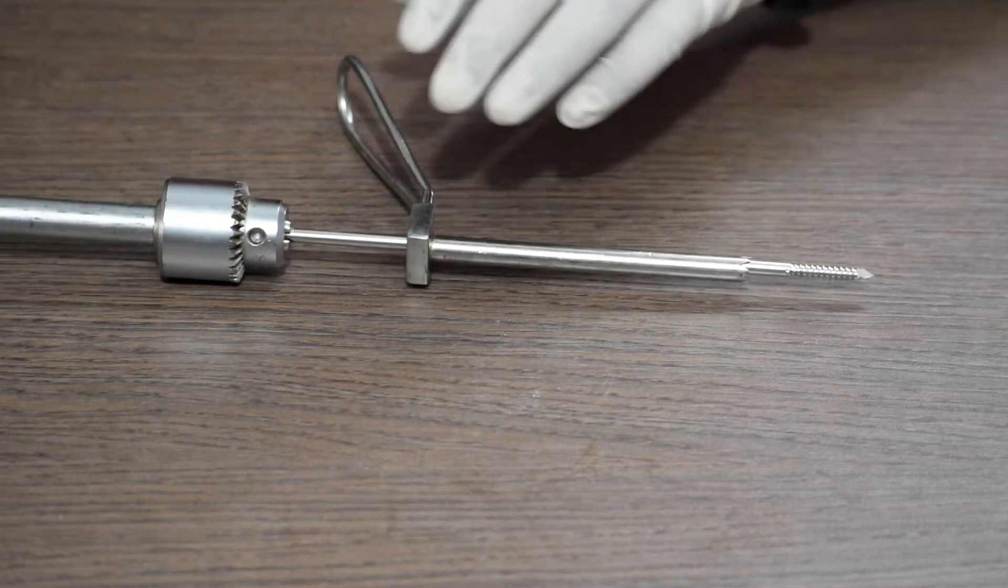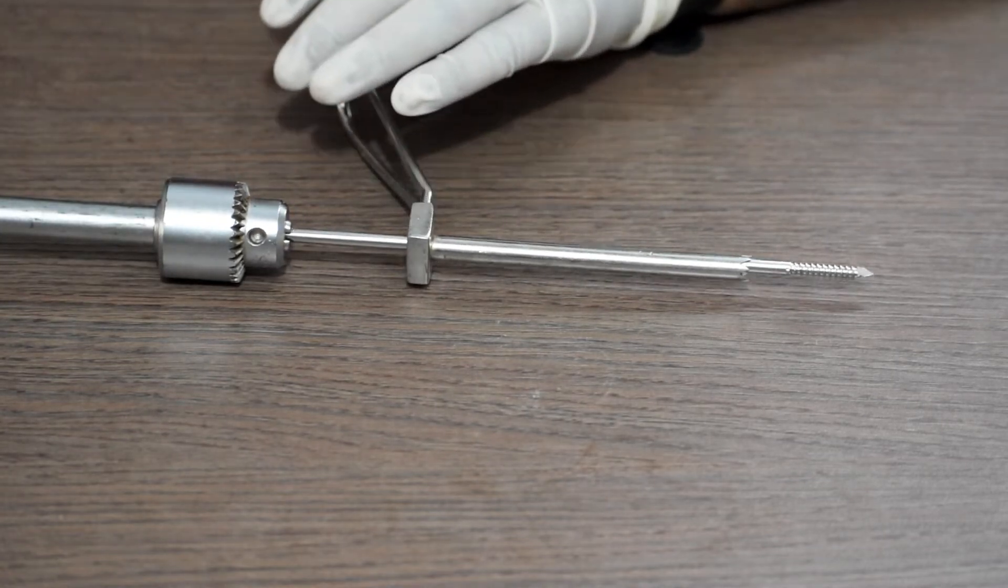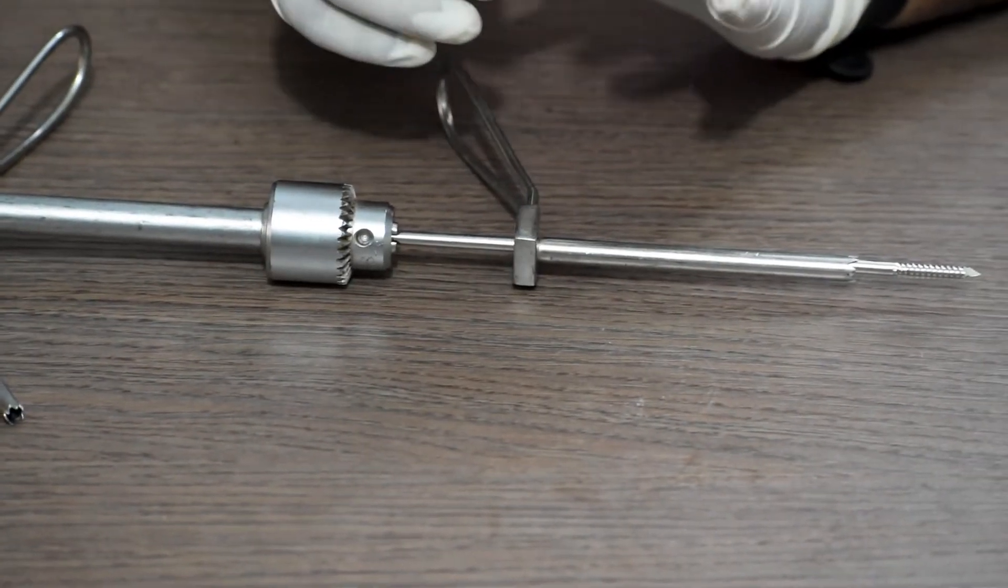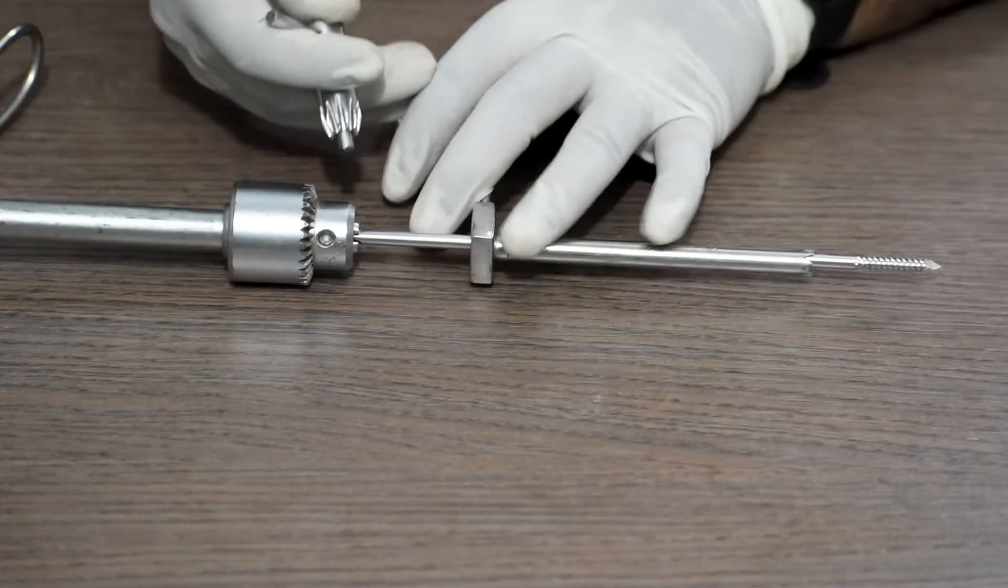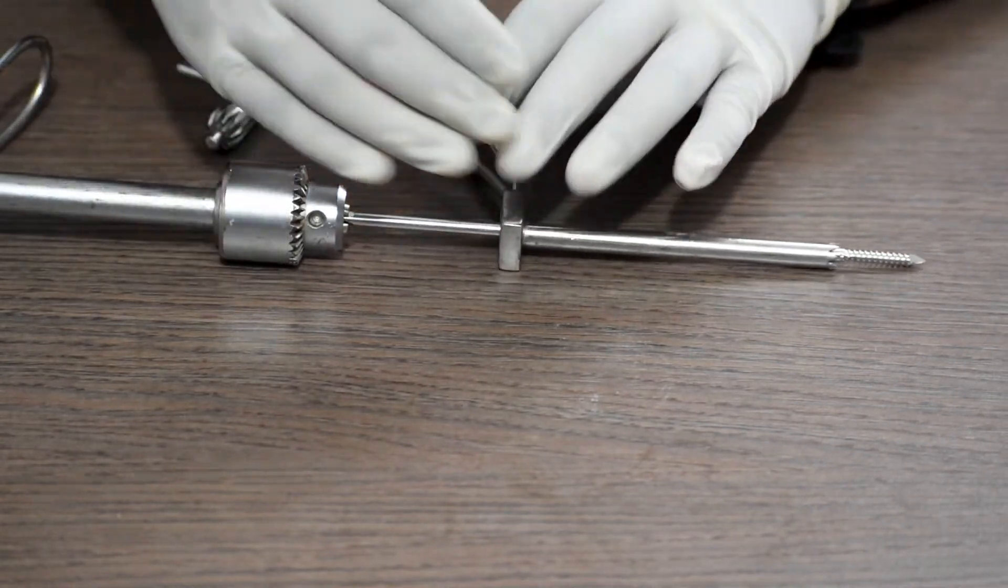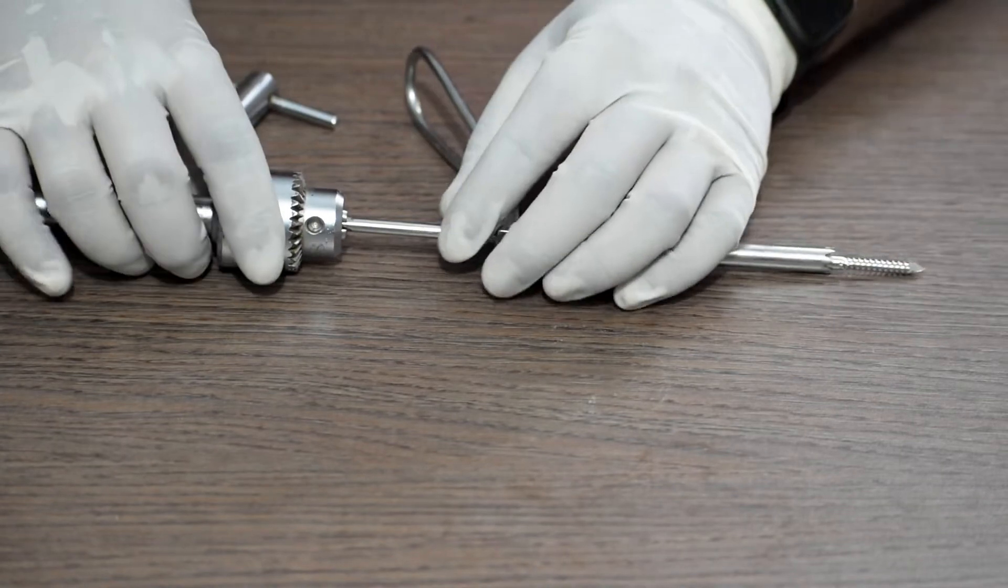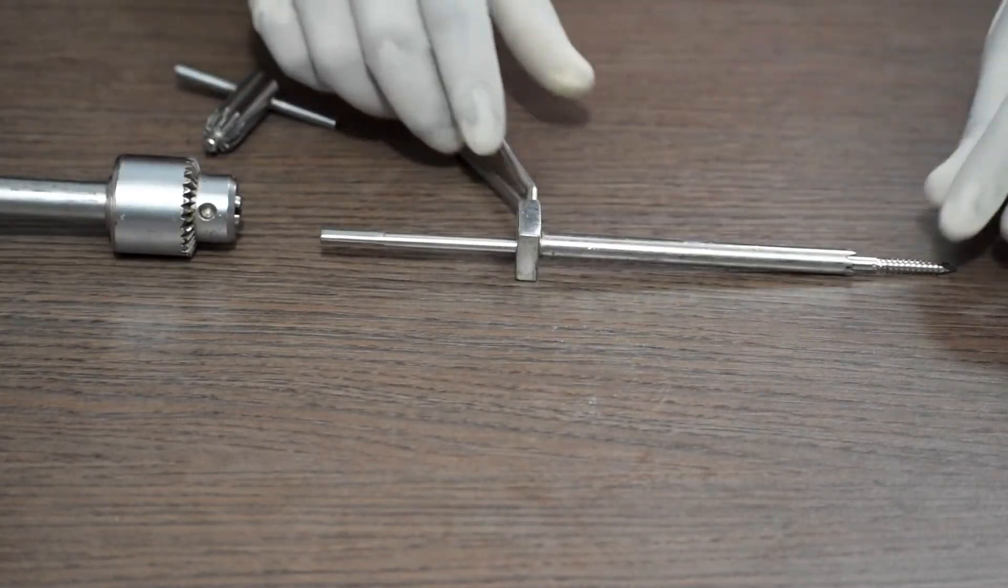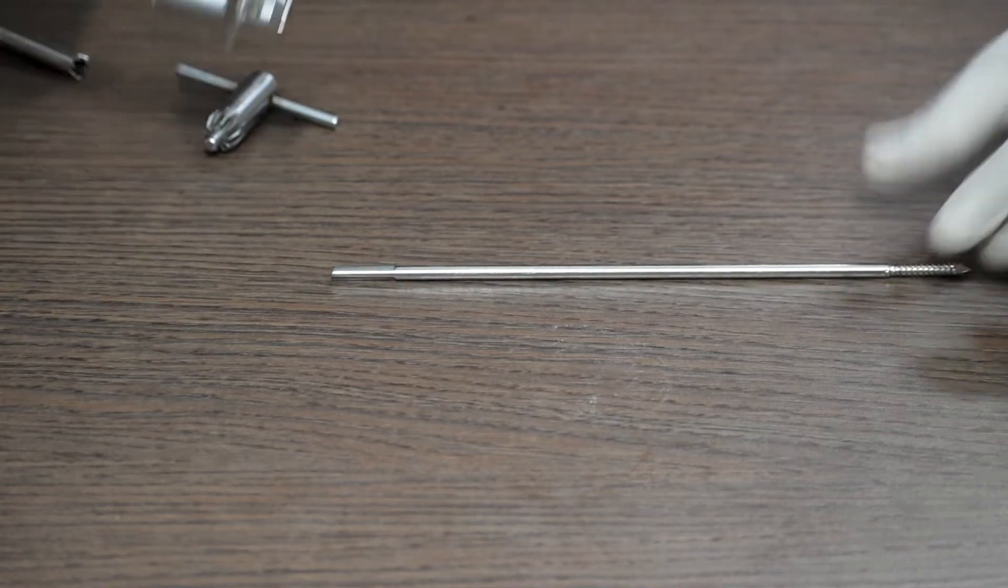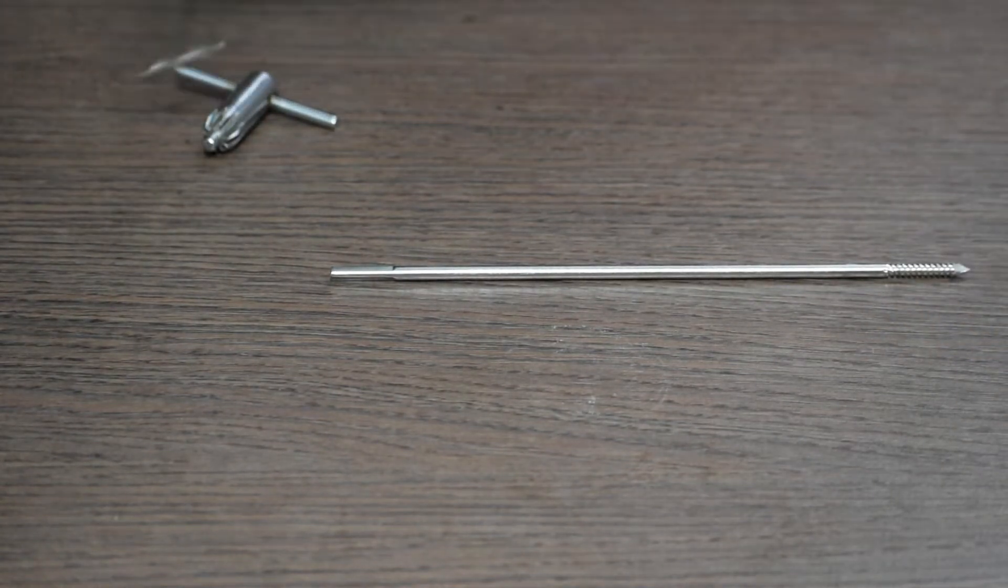With the help of the T-handle chuck with key attachment, once the sand spin is inserted, we remove the T-handle chuck. We also remove the protection sleeve and the sand spin stays back.